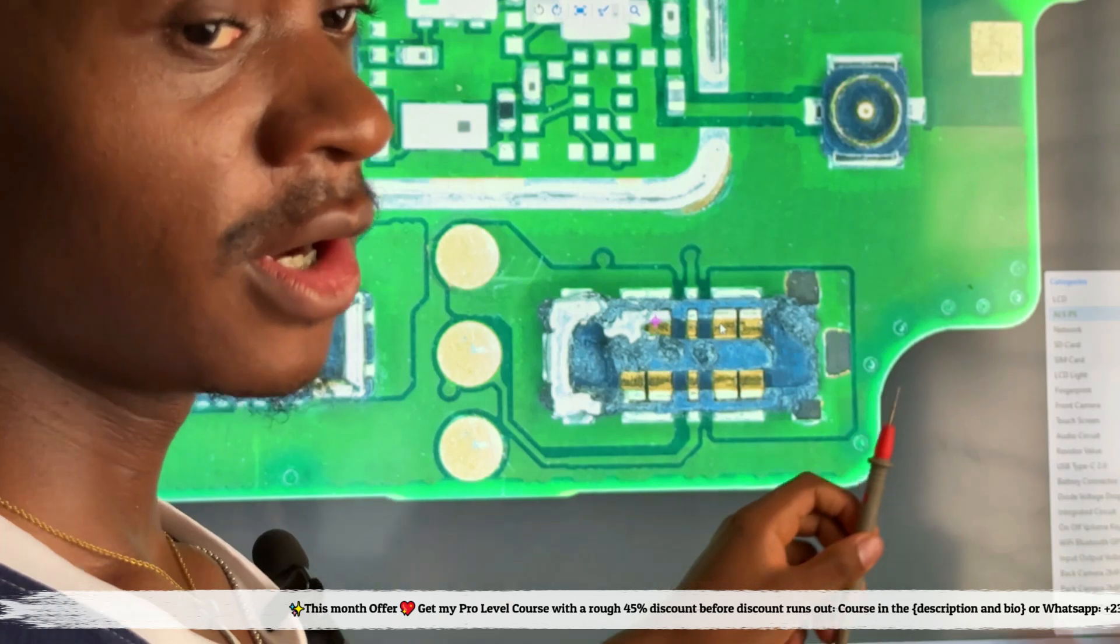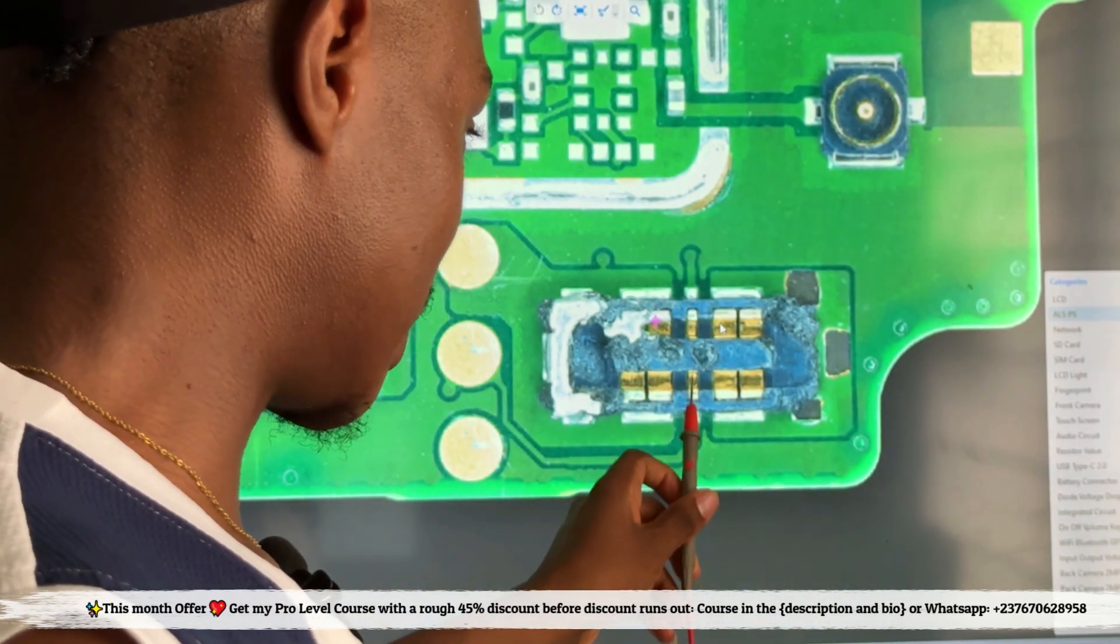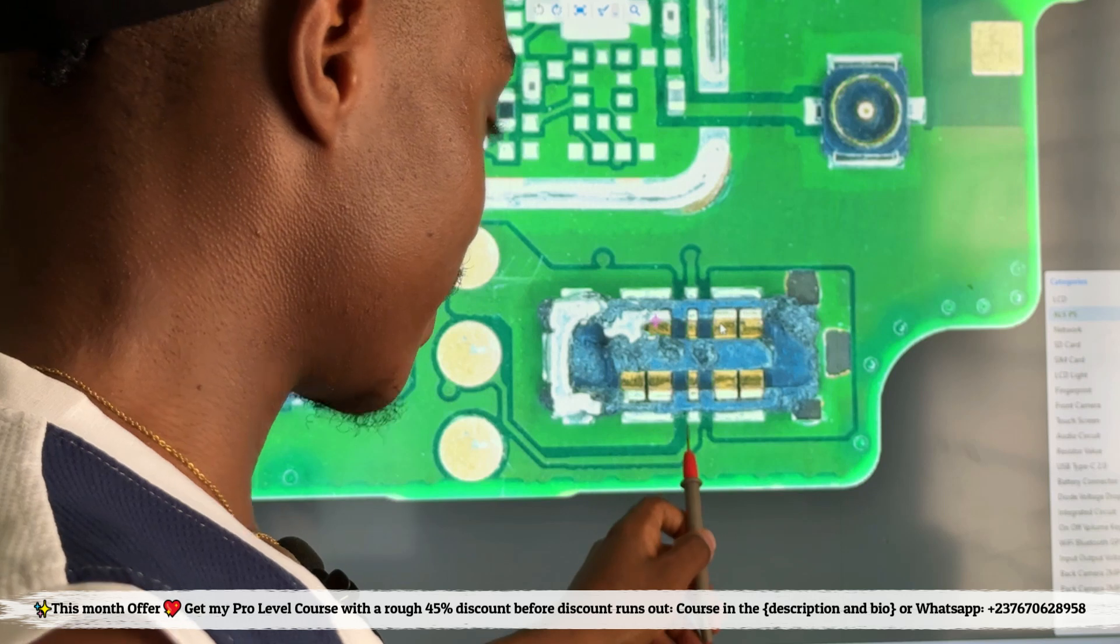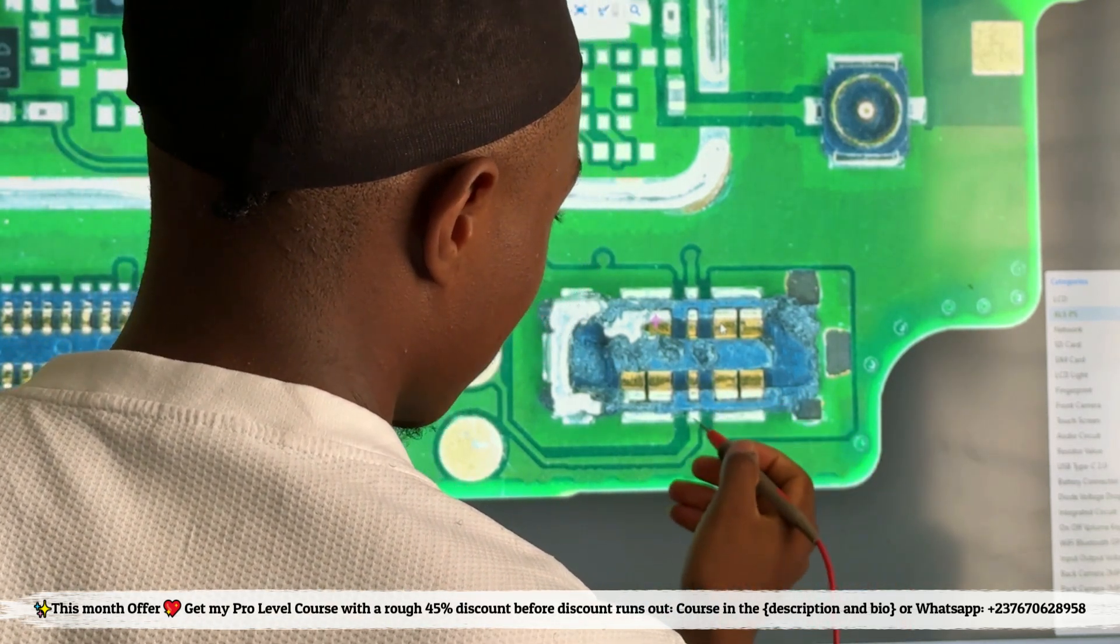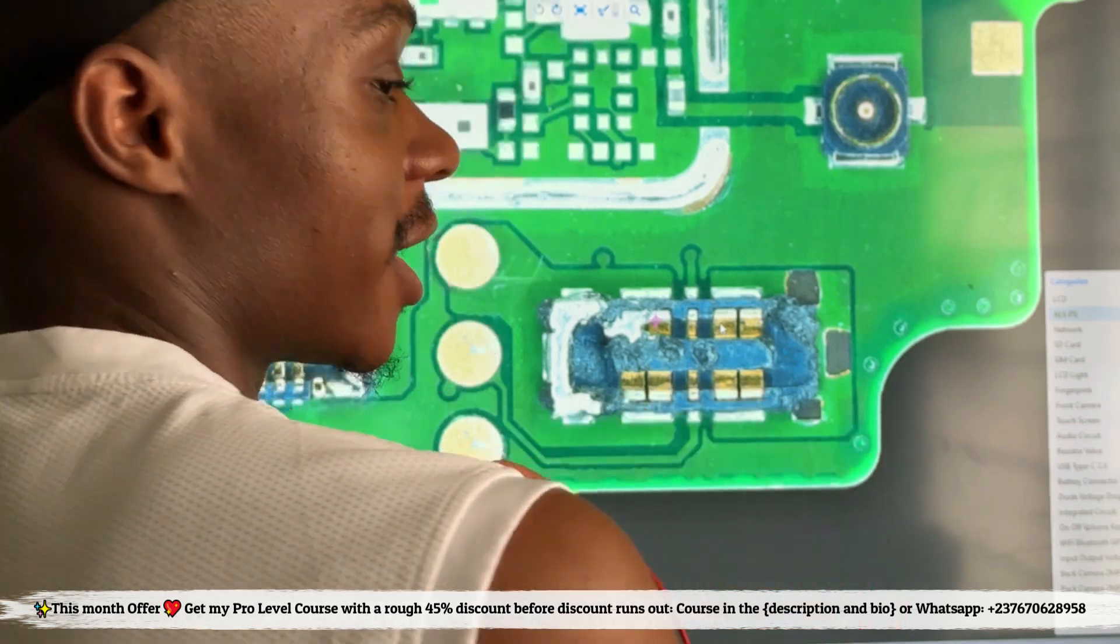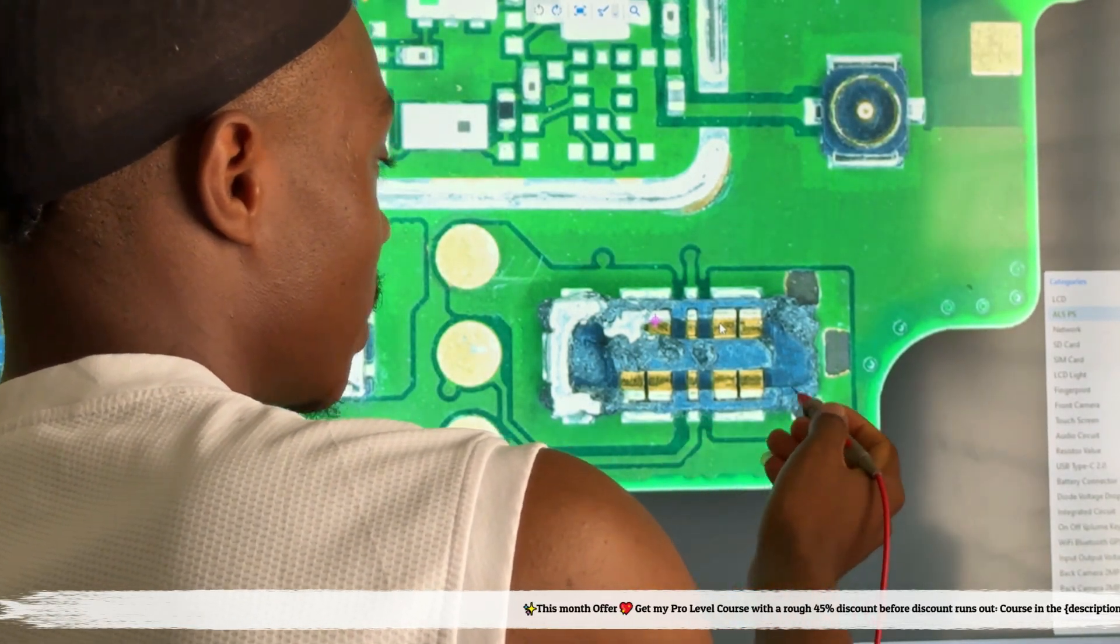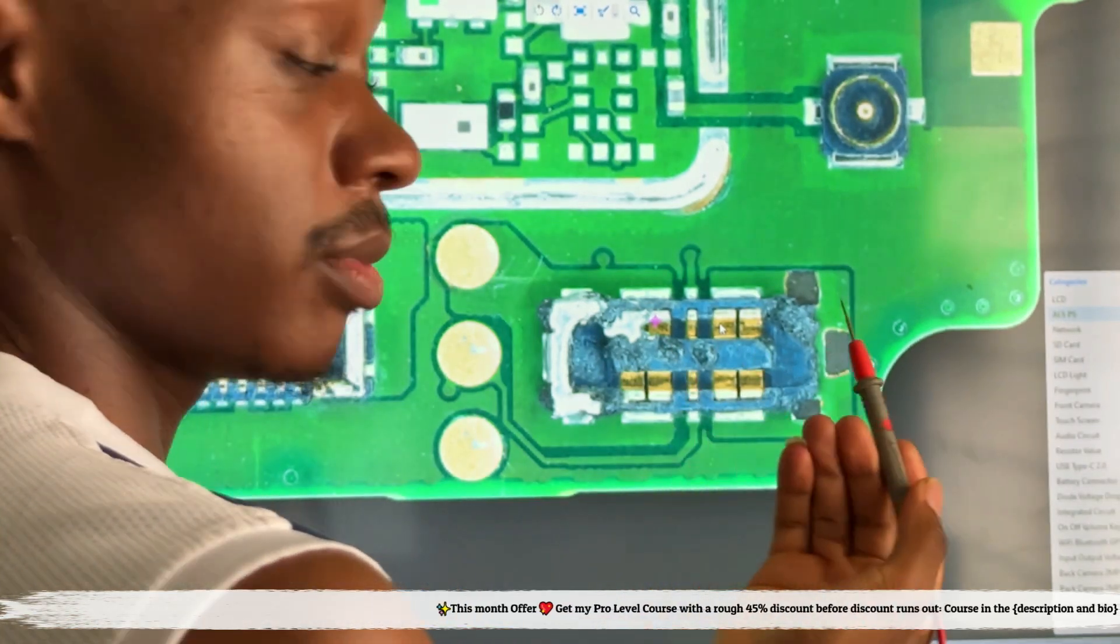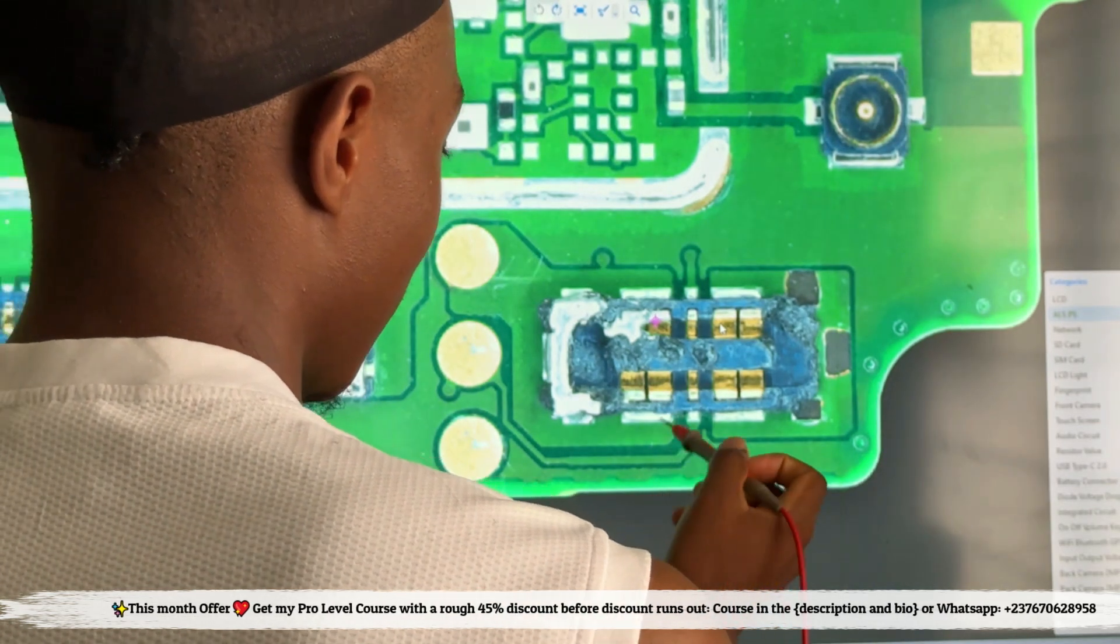For example, if you want to work on this particular pin and it peels off, which means you won't see any area to solder the pin anymore, instead of going online to ask for help, you need to know how to track the lines on the PCB.